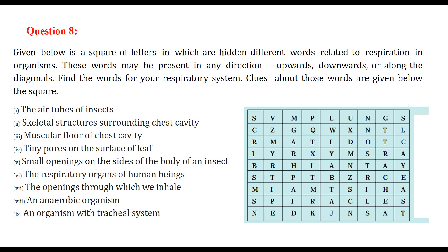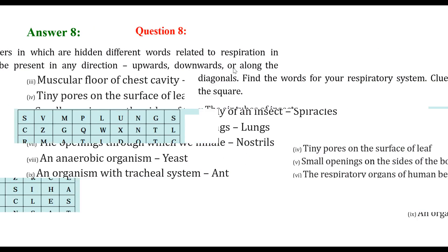We are given a square with certain letters. There is a combination. These words may be present in any direction, there are hidden words there, upwards, downwards, or along the diagonal. We have to find the words for the respiratory systems. The clues are: the air tubes of insects, skeletal structure surrounding chest cavity, it can be rib cage or diaphragm, muscular floor is diaphragm, tiny pores on the surface of leaf is stomata. All these are there.